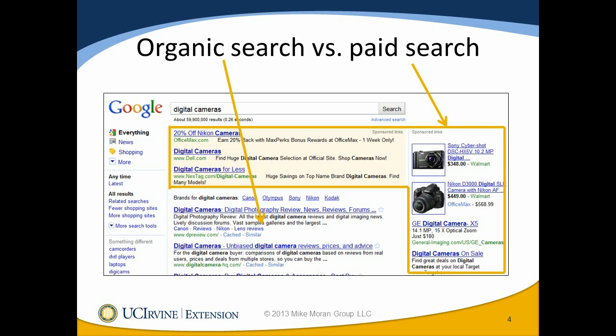At one point, paid search results were sometimes intermingled with organic search results and not even identified. But you can see in this screenshot the words 'sponsored links' in a couple of places, identifying which results are paid and which are not. That's pretty standard now, and I think search engines would come under a lot of fire if they tried to intermingle them again to possibly confuse searchers as to which is organic and which is paid.